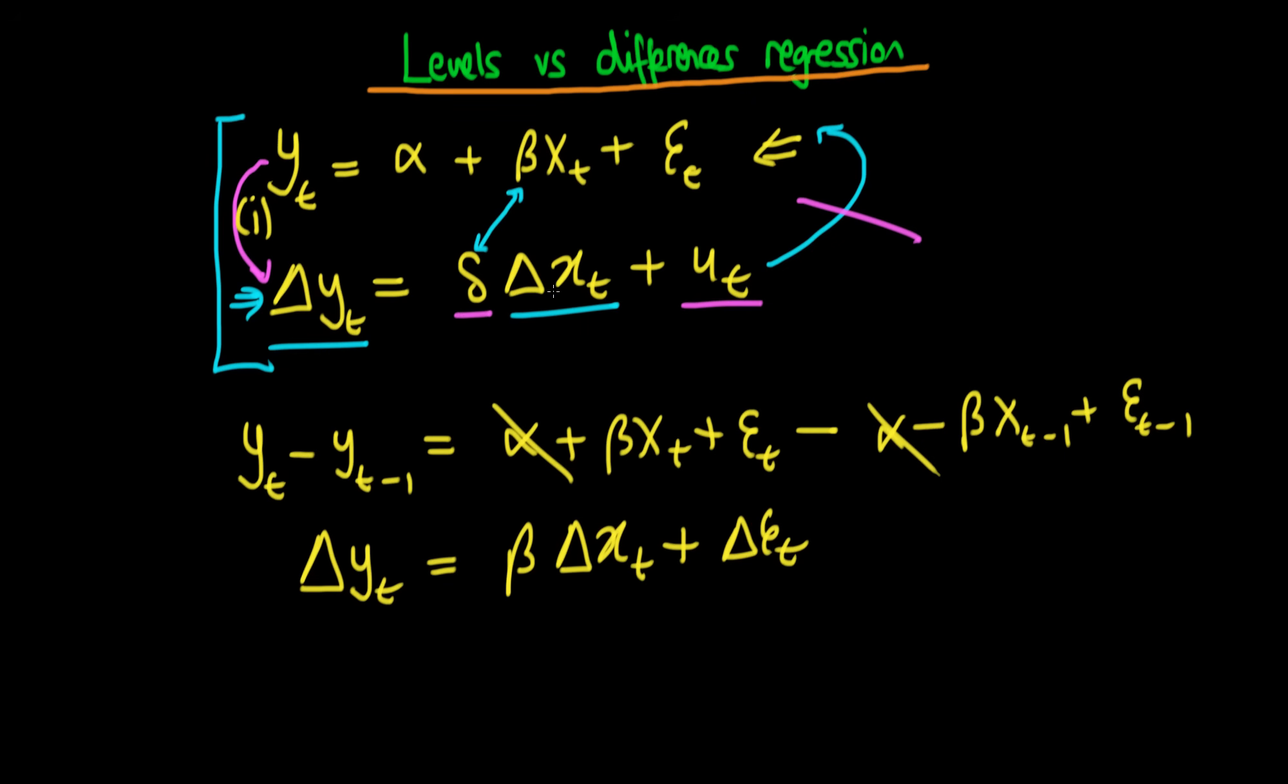It doesn't take long for the effect of these random errors, these ut, to build up and actually to force yt and xt to move in quite different ways and certainly with not a long-run constant relationship between them.